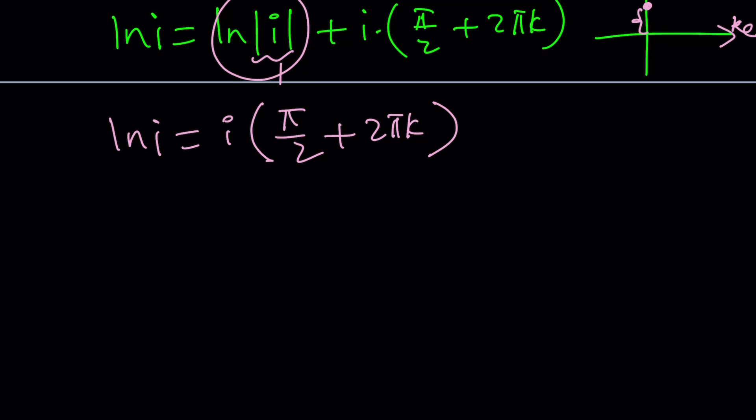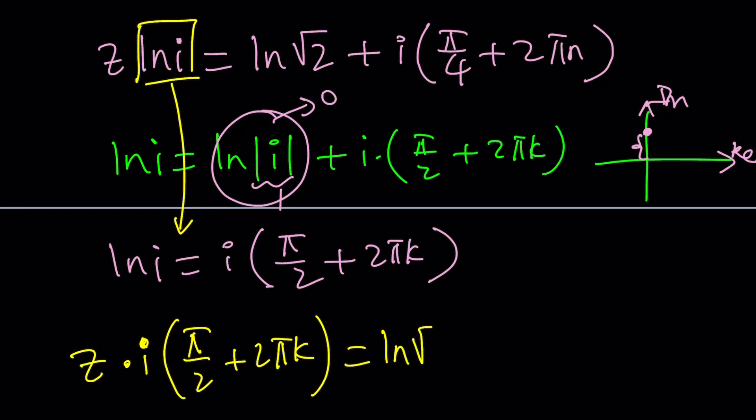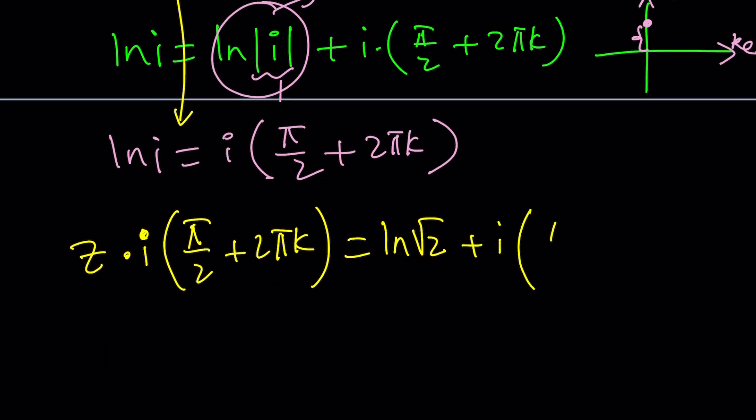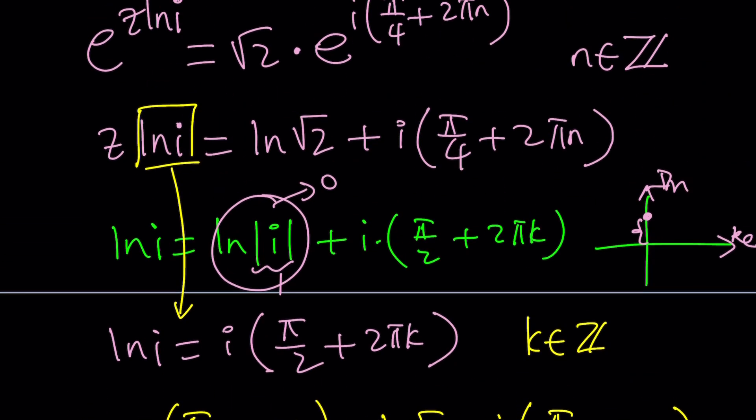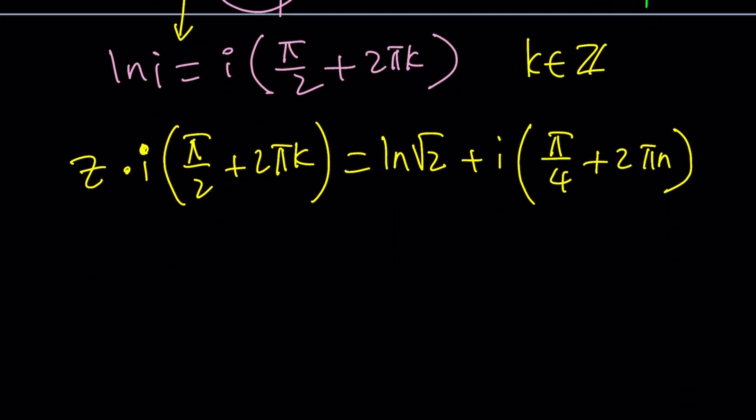Great. Let's go ahead and put it together. So, we're going to now replace this ln i with this. That's going to give us z times i times pi over 2 plus 2 pi k equals ln square root of 2 plus i times pi over 4 plus 2 pi n. n and k are integers. By the way, k is an integer too. I forgot to say that. But they don't have to be the same. They could be different. And we'll talk about what happens if they are the same, or for special values, what happens?